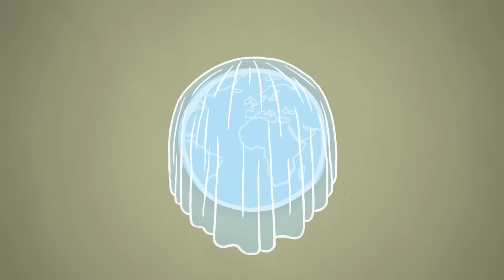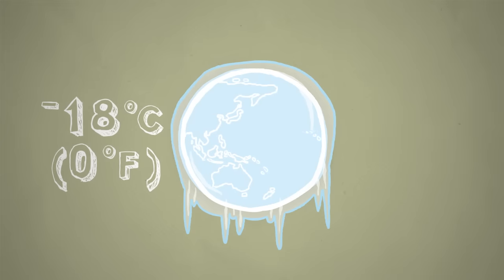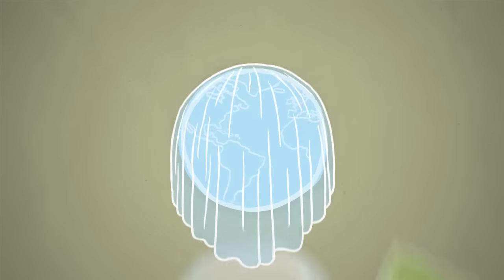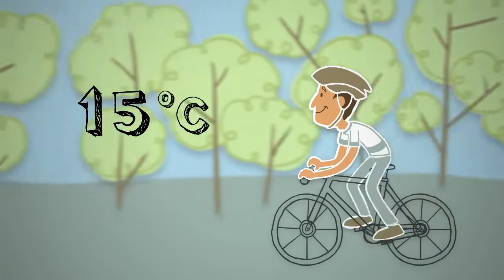In fact, if the Earth didn't have its atmospheric blanket, its average temperature would be about minus 18 Celsius, or zero Fahrenheit. Thanks to the atmosphere, the Earth's average temperature is a much more livable 15 Celsius, about 59 degrees Fahrenheit.